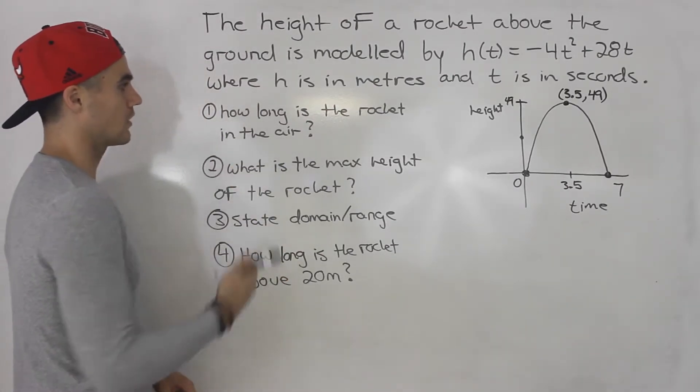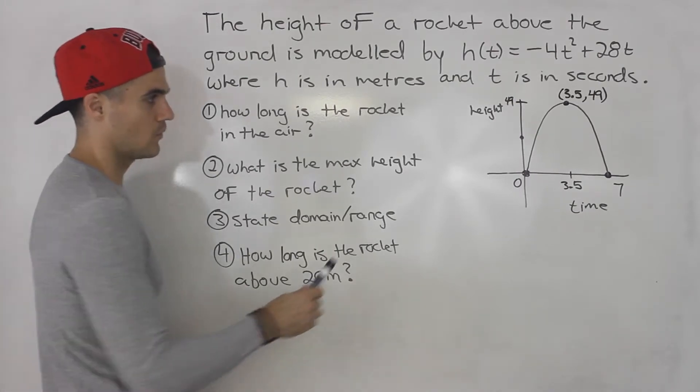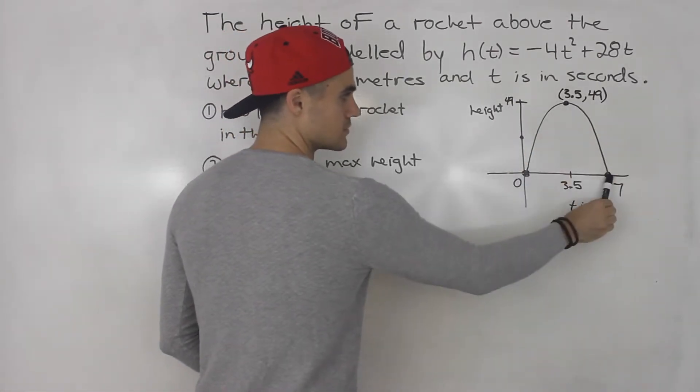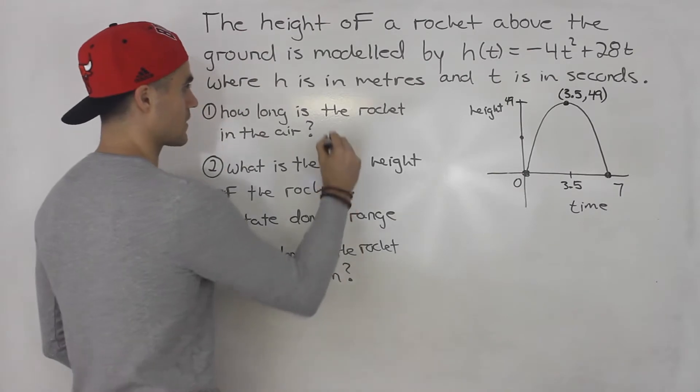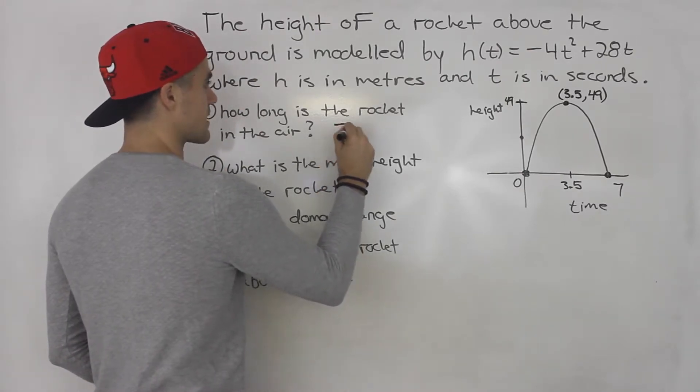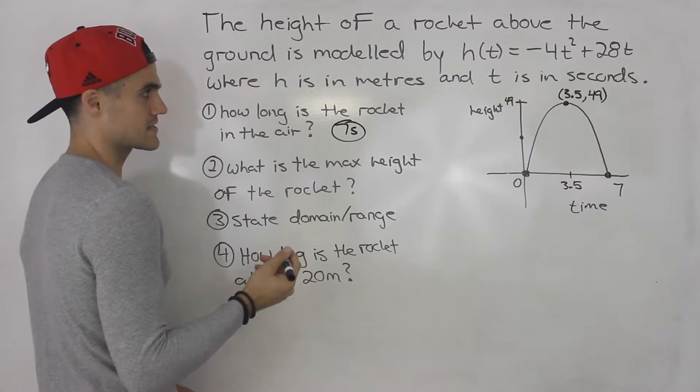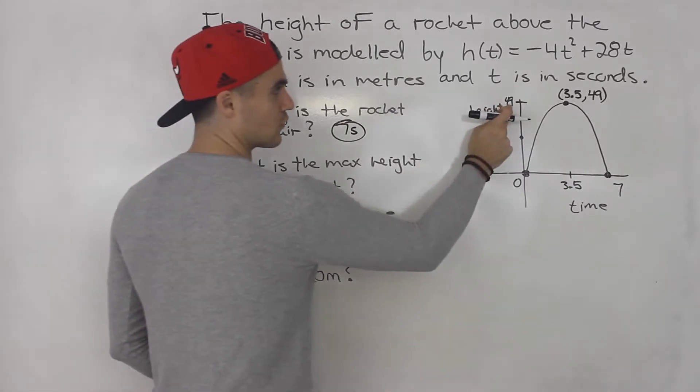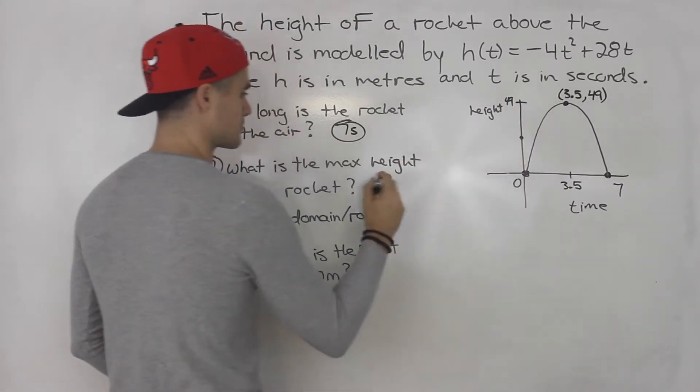So number one, how long is the rocket in the air? Well, from zero seconds to seven seconds, that's when it hits the ground. So the answer to number one is seven seconds. What is the max height of the rocket? 49 meters reaches the max height at this point.